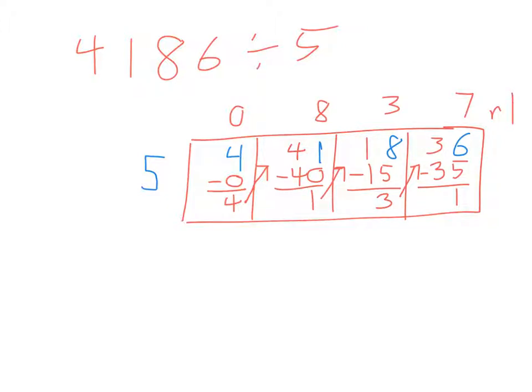There are 837 groups of 5 that go into 4186, or you could say there are 5 groups of 837 with one left over. Thanks for watching.